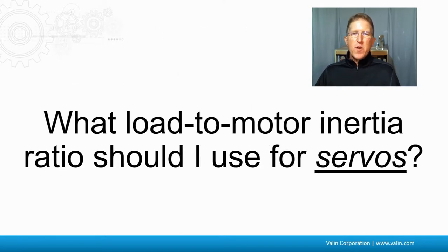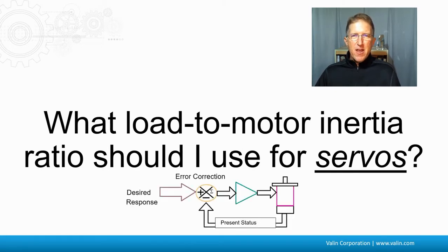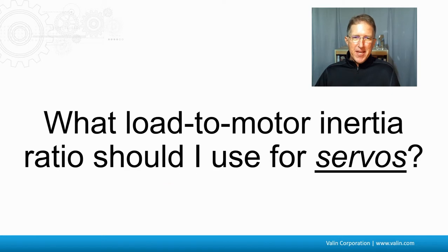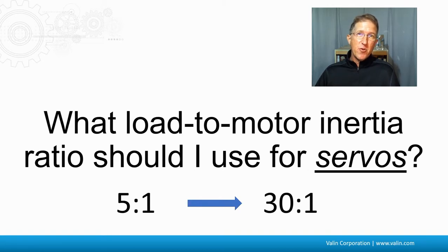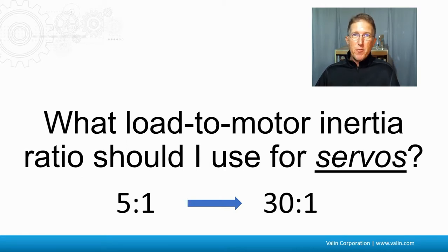For servo motors, servos have an algorithm inside their electronics that has to be tuned — there's a PID loop (proportional-integral-derivative) with math that must be tuned for the application. You'll get different answers from different manufacturers, algorithms, and applications. Some manufacturers aim for 5 to 1; others say 10, 15, or 20 to 1. I've always used 20 as my guideline, but some drives have algorithms good enough to target 30 to 1. If you want the best servo performance, go for a lower inertia ratio. For reasonable performance, 10 to 30 to 1 is fine.